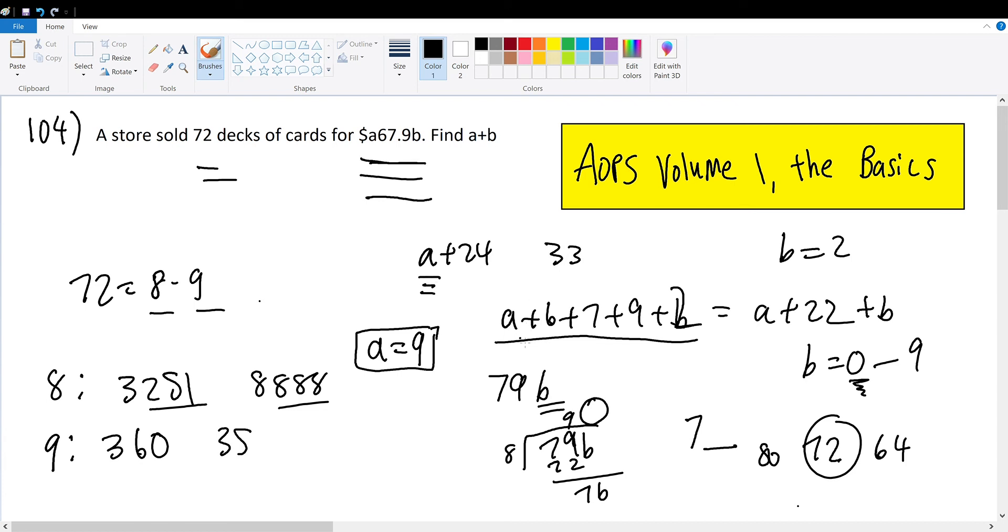So this sum of A plus 6 plus 7 plus 9 plus B cannot exceed 33 after plugging in B, of course. So what can A be that's below 33 and a multiple of 9? Well, let's list our multiples of 9: 9, 18, 27,